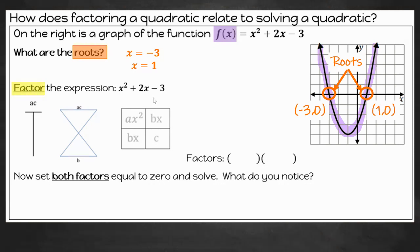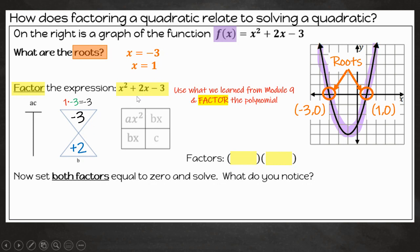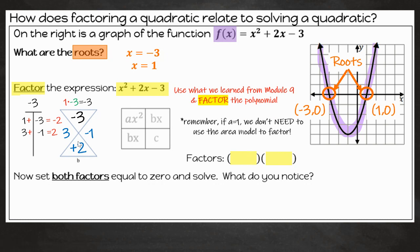Quick review on how we factor: we're going to take our a times our c, so 1 times negative 3, and we have negative 3 equals negative 3. So that goes in the top of our triangle or x puzzle. Then we have our positive 2 because that's our b term. So what we need to determine is what multiplies to give us negative 3, but adds together to give us a positive 2. Well, negative 3, there's only two factors: there's 1 and negative 3, or negative 3 and 1. If I add 1 and negative 3, I get negative 2. If I add 3 and negative 1, I get a positive 2. That's what I need. So that means my factors are a positive 3 and a negative 1. Remember, if our a equals 1, we don't need to use this area model. You can use it if you prefer, but it's really not necessary because we've already found our factors as x plus 3 and x minus 1.